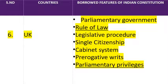जो general procedure है वो यह है: जब government कोई law बनाती है, तो वो किसी एक house में bill introduce किया जाता है। उस house के द्वारा उसमें बहस होती है, जब वो house उसे pass कर देता है, उसके बाद वो second house में जाता है। Second house भी उसमें बहस करता है, जब second house के द्वारा pass हो जाता है, तो at last वो राष्ट्रपति के पास जाता है। जैसे ही राष्ट्रपति उसमें अपनी consent दे देते हैं, वो law बन जाता है।